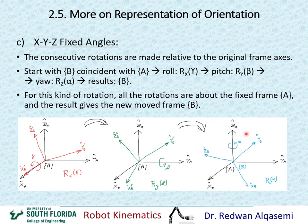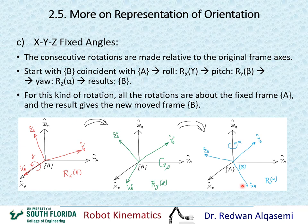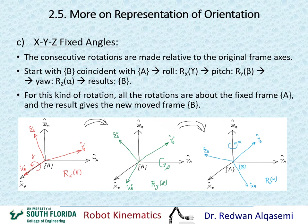Then in the third step, we do a yaw — rotation about z by alpha. The rotation about z is about the original z of frame A, the fixed line from the black axis. Doing this rotation about z_A by alpha moves x, y, and z to the final orientation called frame B. This is completely different from doing rotations about the new axes that result from each rotation, which we'll see later in this chapter.